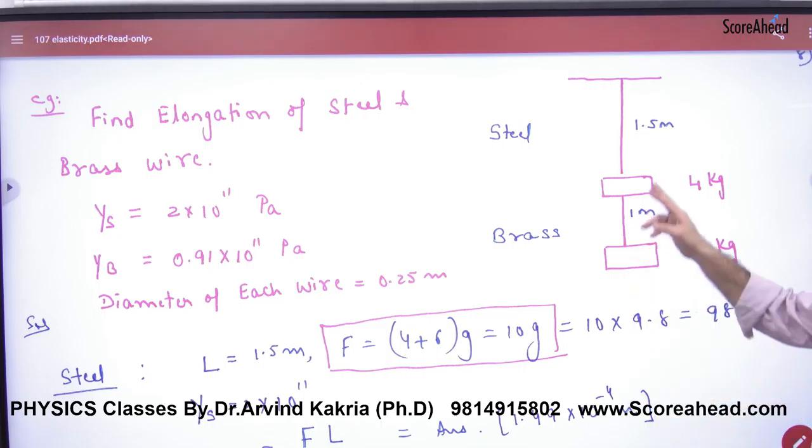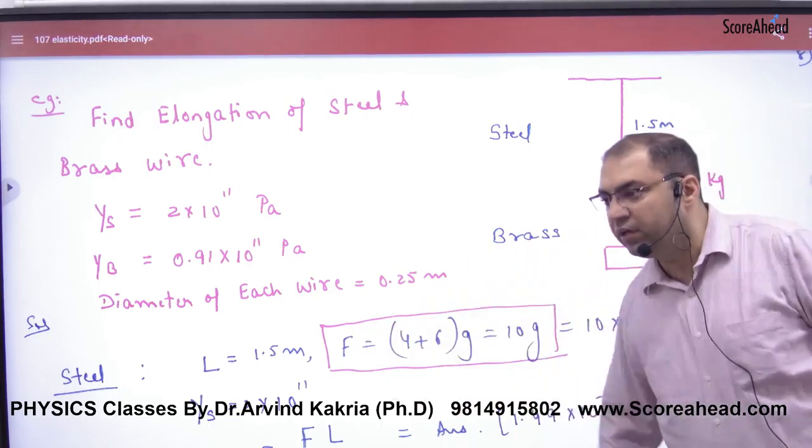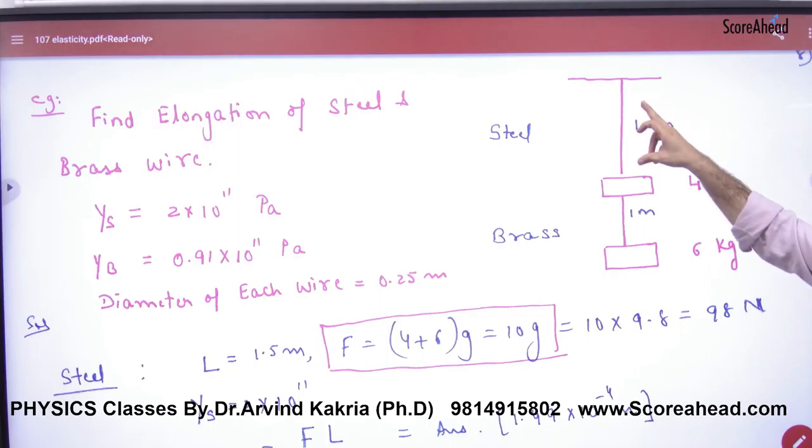So first let's start with steel. What length of steel is 1.5? What will force on the steel wire? This block weight plus this block. Because both blocks are getting 10 kg, right?